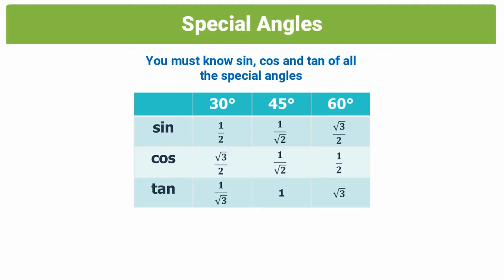Special angles are your angles 30 degrees, 45 degrees, and 60 degrees. And these are angles of which you are expected to know each trig function. So if you got, for example, sine 30 degrees in an exam, you'd be expected to know the value of that without using a calculator. So you would have to know that sine 30 was equal to half.